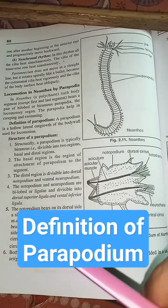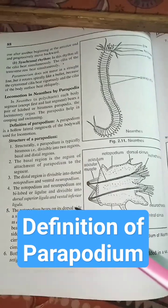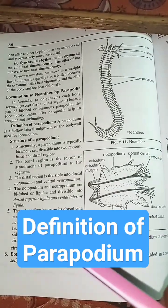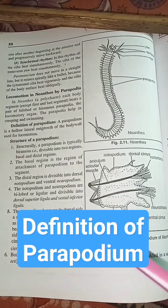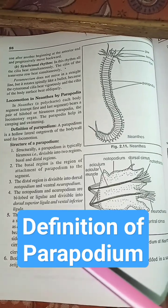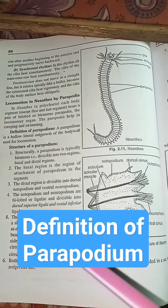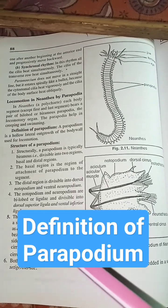The notopodium bears on its dorsal side a slender tentacular appendage known as dorsal cirrus, while the neuropodium bears a similar appendage.